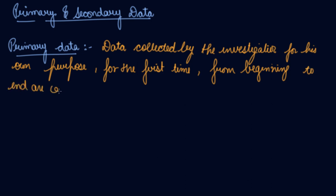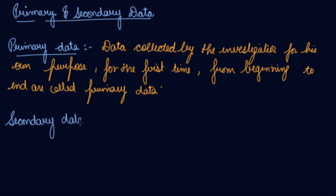Primary data is data which is collected for the first time and you collect it for your own purpose — that is the primary data. What is secondary data? You do not collect the data for your own purpose; instead you visit some agency or take data from them. These are data which are already in existence.